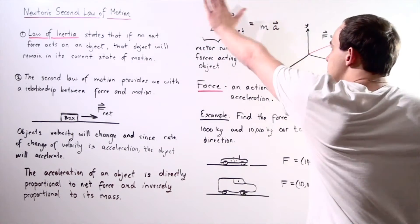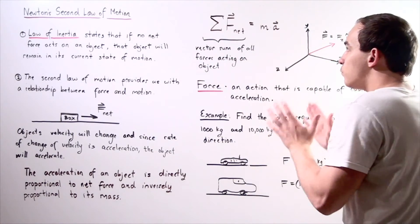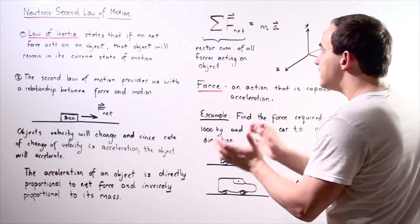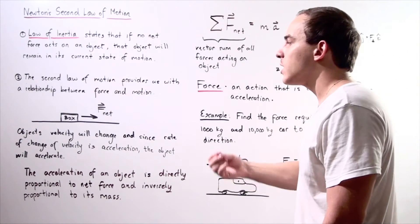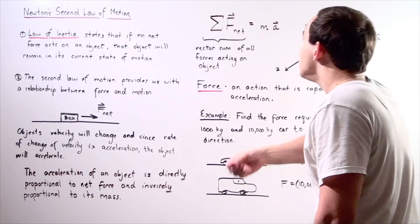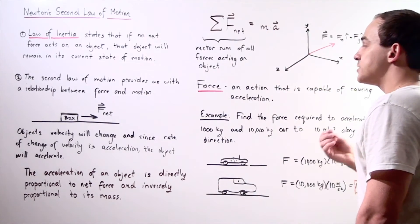So what exactly does this state? It states that if we have a constant net force acting on our object, the more mass our object has, the less acceleration it will experience.